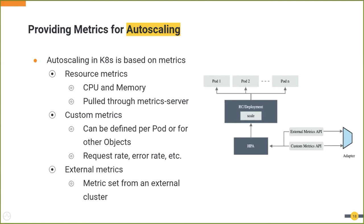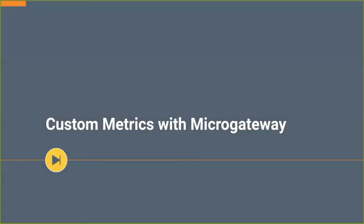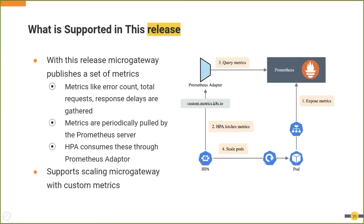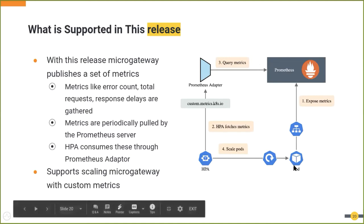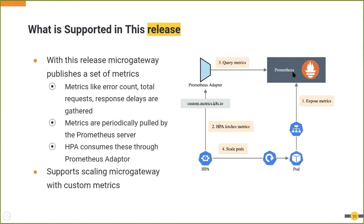In this release, micro gateway allows scaling using custom metrics. It publishes a set of runtime metrics to a Prometheus server and makes those available for query. These metrics are collected while requests pass to the server and are maintained in the memory of the micro gateway. When configuring Prometheus, you specify which services need monitoring, so when a new pod comes under that service, Prometheus will automatically discover the pod. Each micro gateway exposes a metric endpoint which will be scraped by the Prometheus server.